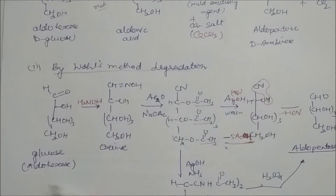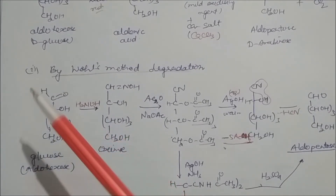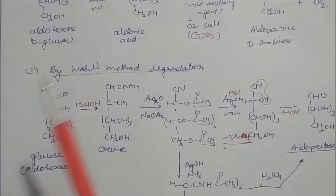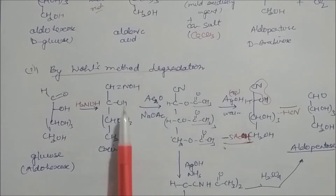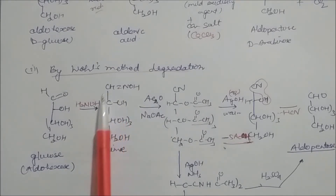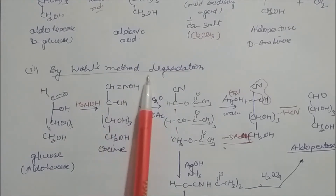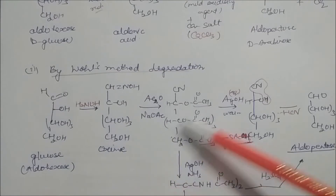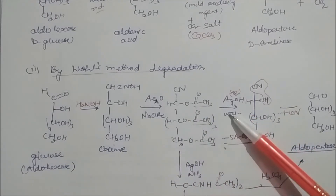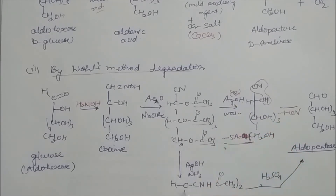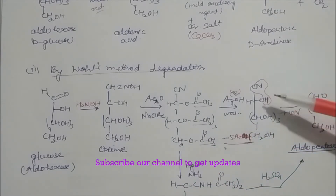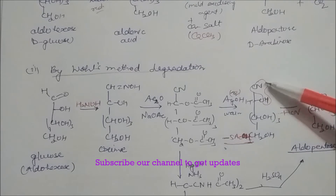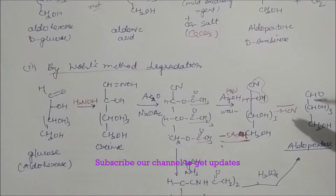The second method of chain shortening is the Wohl degradation. Starting from glucose, hydroxylamine is added to the carbonyl carbon to form an oxime. Treatment with acetic anhydride in pyridine converts the oxime to a nitrile with removal of water, and the hydroxyl groups are converted to acetate esters. Silver hydroxide, a mild oxidizing agent, then cleaves the acetate groups to give acetic acid, and the nitrile is further converted to an alcohol on heating.